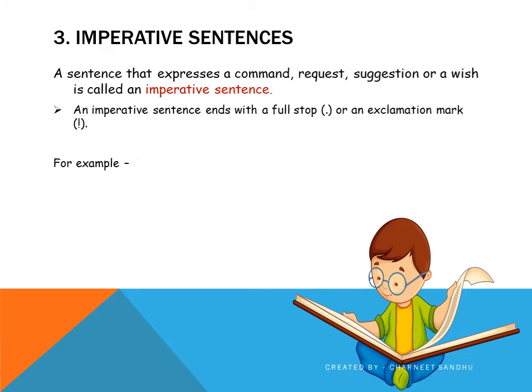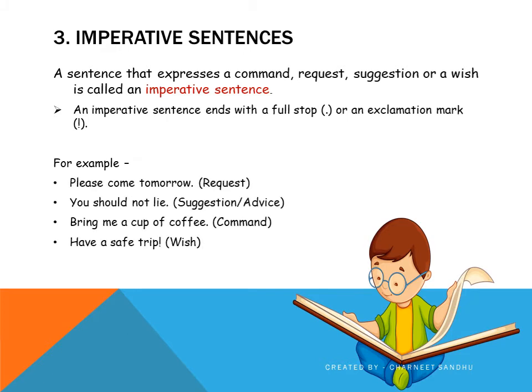Let us look at some examples. Please come tomorrow — this sentence is a request, so it falls under the category of imperative sentences. You should not lie — this is a suggestion or an advice, so this sentence is also an imperative sentence. Bring me a cup of coffee — this sentence is a command or an order. Have a safe trip — this sentence is a wish. So all the imperative sentences fall under these four categories: request, suggestion, command, or wish.